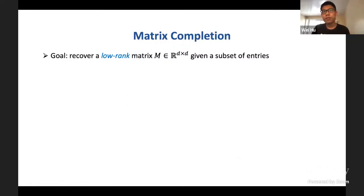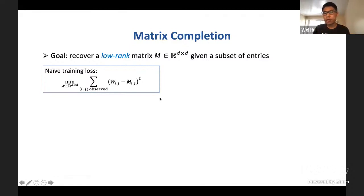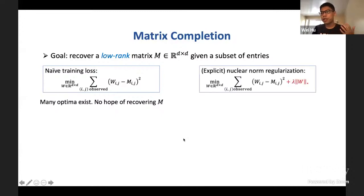So how do you solve this problem? First, we can easily write down a naive training loss, which looks like this. We try to find a matrix W, which is our model, that minimizes this training loss over the observed entries. And of course, many optima exist for this problem because we can just assign any values to the unobserved entries. So there's no hope of recovering the true matrix M using this naive approach. But that's simply because we haven't used the assumption that the matrix should be low rank. So we may want to add some explicit regularization to encourage low rank. The classic approach is to add a nuclear norm regularization like this. Recall that nuclear norm is the sum of all the singular values of a matrix, which can be viewed as a convex relaxation of the rank.